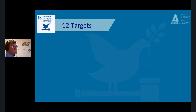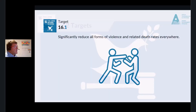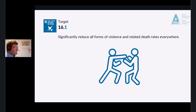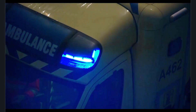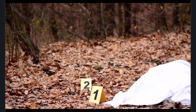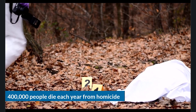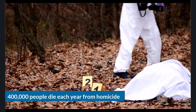SDG 16, Peace, Justice and Strong Institutions has 12 targets. Target 16.1: Significantly reduce all forms of violence and related deaths everywhere. Homicide is a large killer globally — in some countries it is one of the leading causes of death. More than 400,000 people die each year from homicide, many of them young adults.